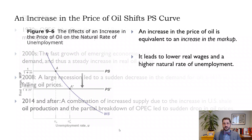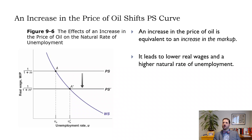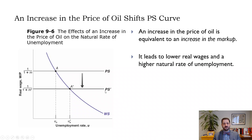We don't really have the price of oil in our model — we don't even have input prices directly. One way to model it is to think of an increase in an important input price as like an increase in the markup, except instead of going to all producers equally, some of it just goes to oil producers. When that happens, we get a shift down in our price-setting curve, and we move along our wage-setting curve, resulting in a lower real wage and a higher natural rate of unemployment.